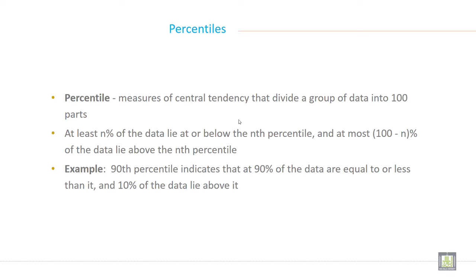Percentile is a measure of central tendency that divides a group of data into 100 equal parts. At least n percent of the data lie at or below the nth percentile and at most 100 minus n percent of the data lie above the nth percentile.